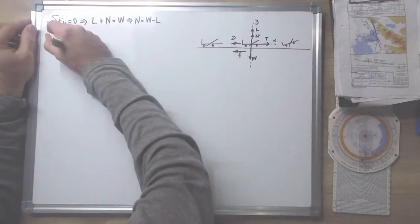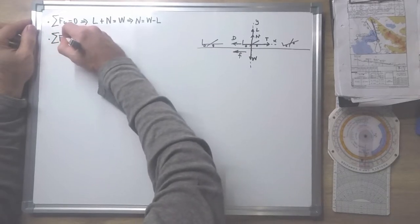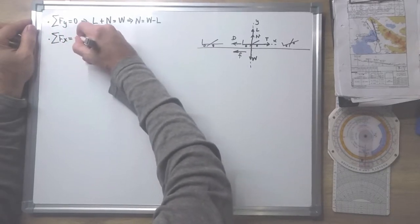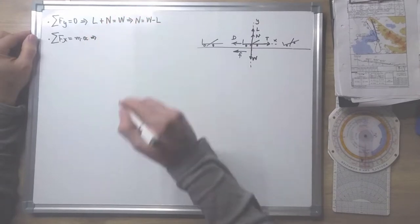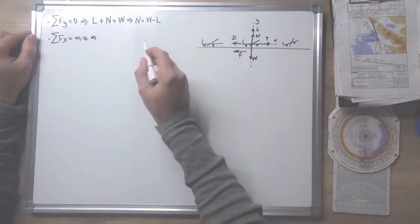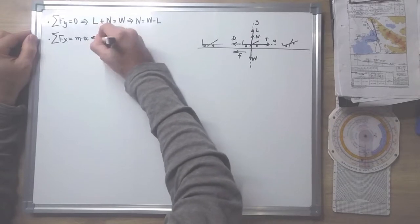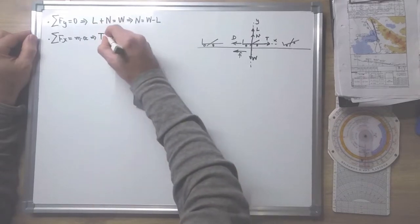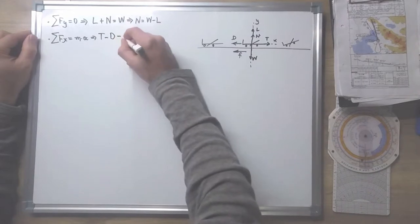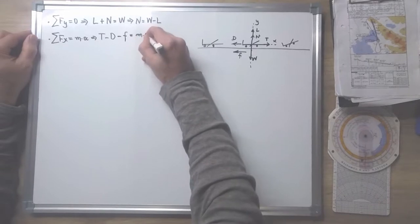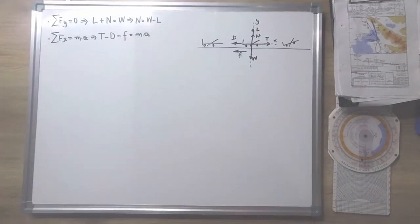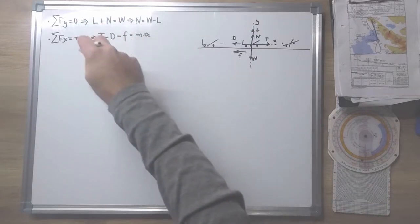On the horizontal axis, the aircraft is accelerating. The forces on the horizontal axis are: thrust minus drag minus the friction with the ground, and all these create the acceleration of the aircraft.